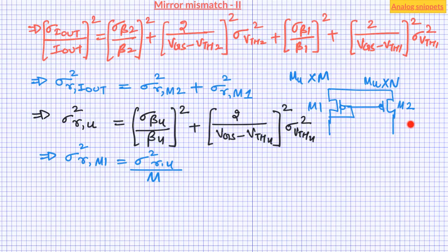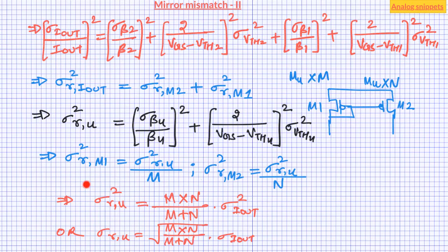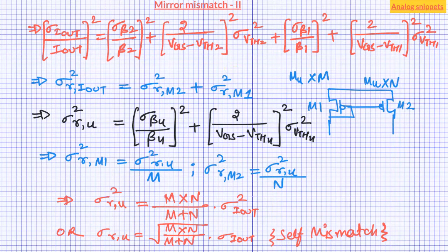We can write a similar equation for transistor M2. Using these equations we can express the variance of unit devices in terms of variance of I_out. This quantity is known as self-variance, and if we take the square root of both sides, it is known as self-mismatch. By definition, the self-mismatch of unit transistors will be uncorrelated or independent from each other, and we can use this equation along with self-mismatch to calculate the mismatch of any combination of these unit devices.